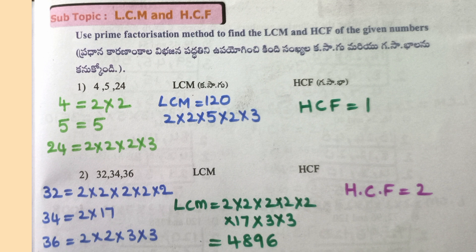Question 2: 32, 34, 36. Factorizations: 32 = 2×2×2×2×2, 34 = 2×17, 36 = 2×2×3×3. LCM = 4896, HCF = 2.